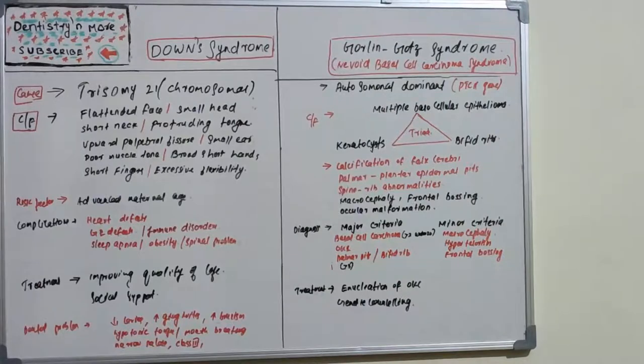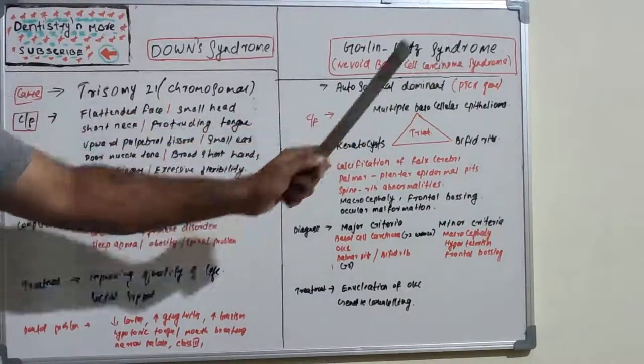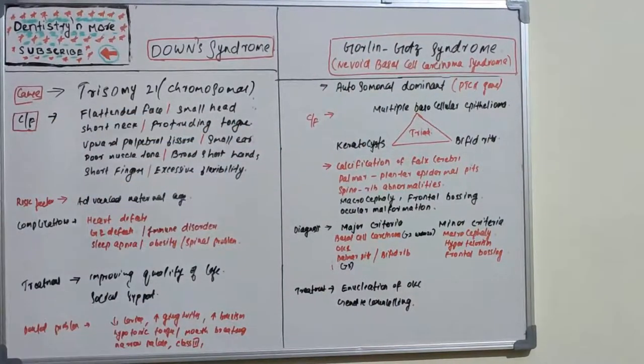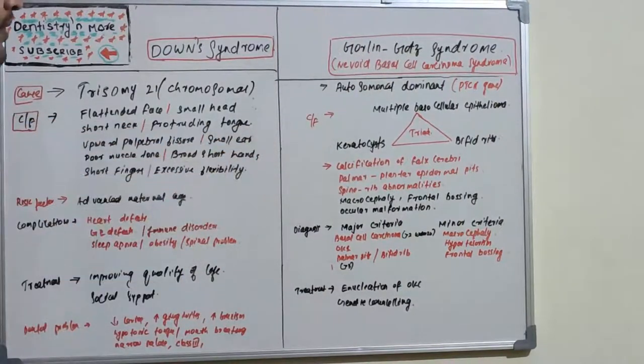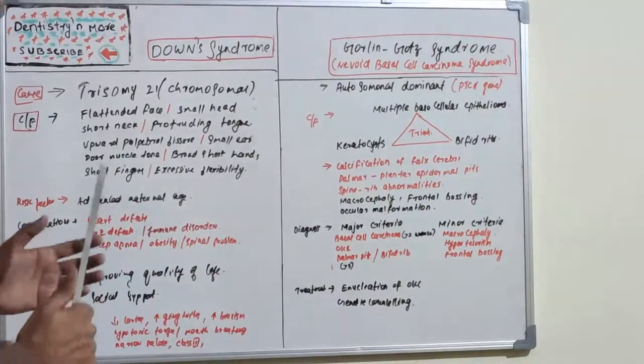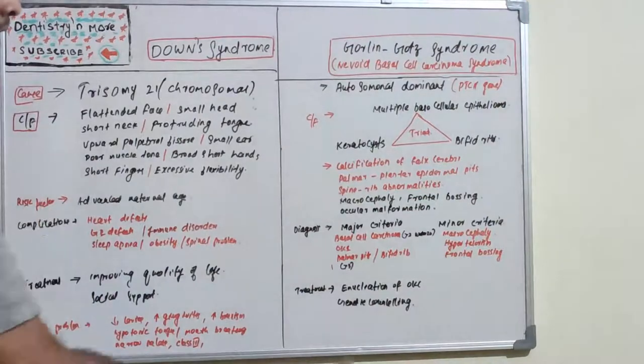Gorlin-Gott syndrome is also known as nevoid basal cell carcinoma syndrome. As the name suggests, it was explained by two people: Gorlin and Gotts. It is a genetic problem, an autosomal dominant genetic disorder.